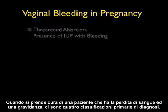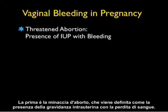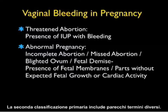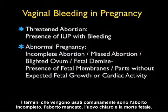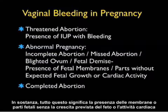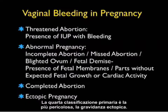When caring for a patient with vaginal bleeding in pregnancy, there are four main classifications of diagnoses. First is a threatened abortion, defined as the presence of an intrauterine pregnancy with bleeding. The second encompasses incomplete abortion, missed abortion, blighted ovum, and fetal demise — all meaning the presence of fetal membranes or parts without expected fetal growth or cardiac activity. Third is a completed abortion with no further presence of fetal membranes or parts and a closed cervical os. The fourth and most dangerous is ectopic pregnancy.